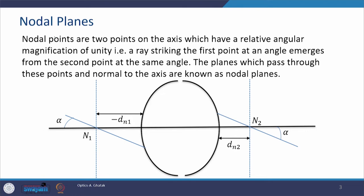Before introducing nodal planes, let us define what nodal points are. Nodal points are two points on the axis which have a relative angular magnification of unity. In the case of unit planes, the magnification was unity, but here it is relative angular magnification. The magnification here is angular magnification, whereas in the case of unit planes it was linear magnification — the usual magnification. In case of nodal planes, it is angular magnification which is unity.